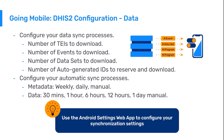Your data sync process can be configured using the Android settings of the app. It is possible to define the number of tracked instances, events, dataset periods, and auto-generated IDs to download. This will ensure having enough data to work with. It is also recommended to configure an automatic period for the metadata and data sync process. By default, the app will schedule it every 24 hours, and in case the user doesn't have internet connection at that time, the app will trigger the sync the moment the device gets connectivity.